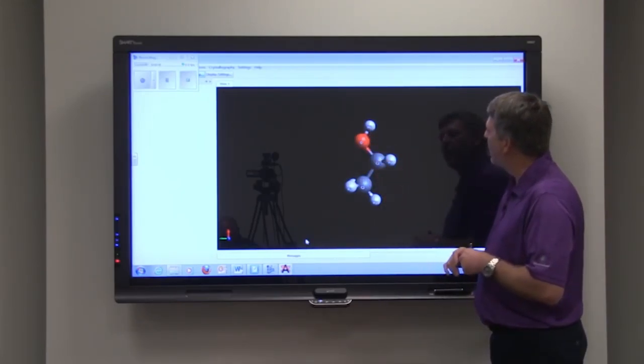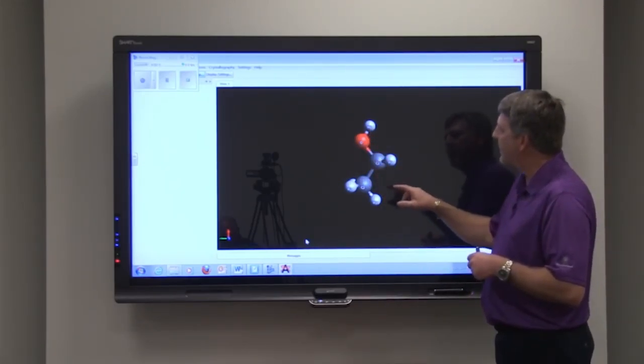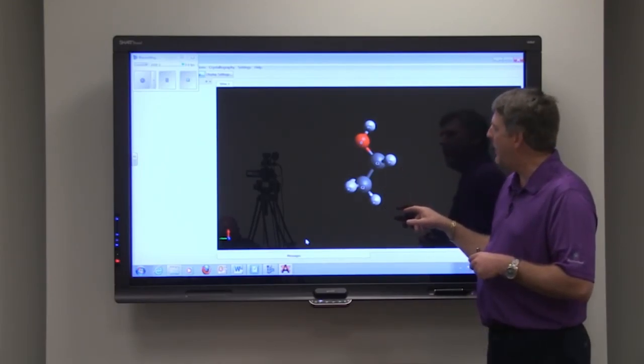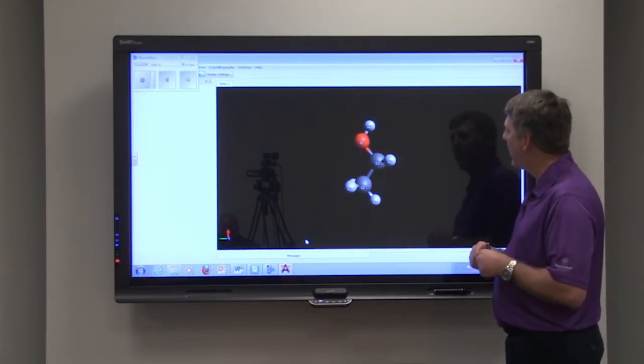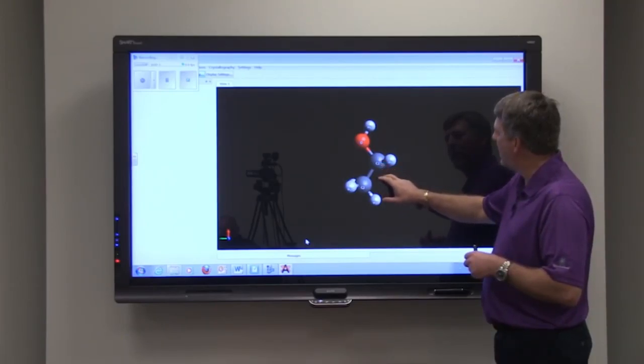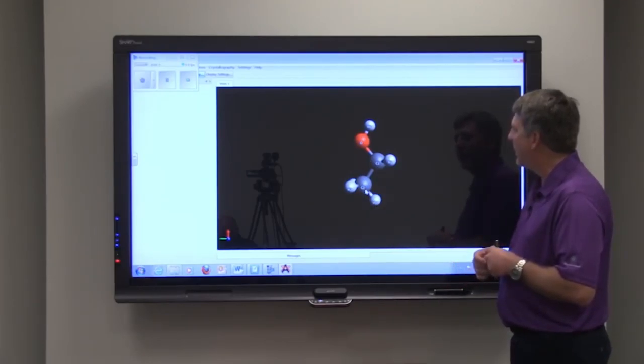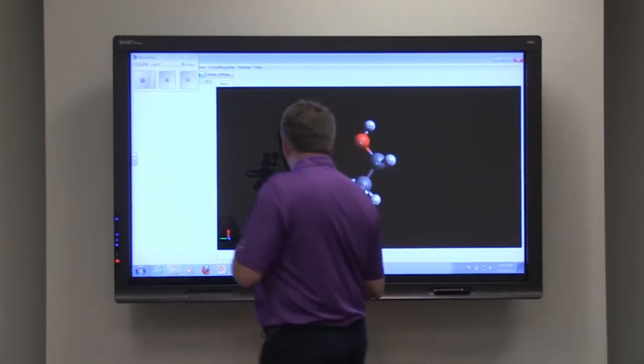Then you see our OH group, which makes it an alcohol. So this is ethanol - a carbon with a hydroxyl group attached, and then that carbon's attached to another carbon that has three hydrogens.